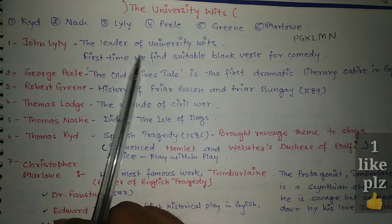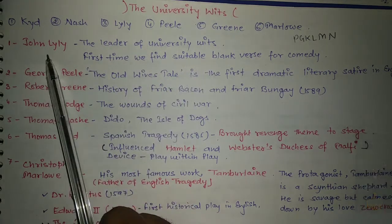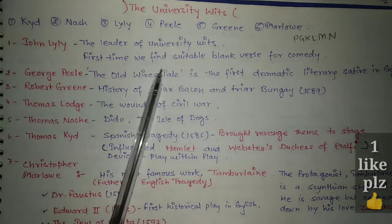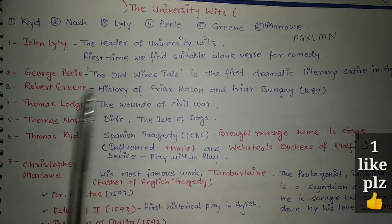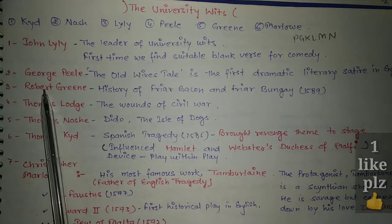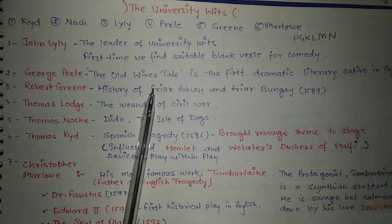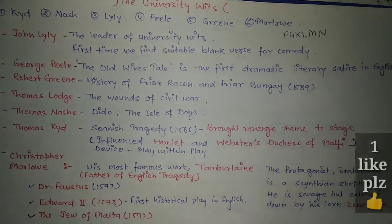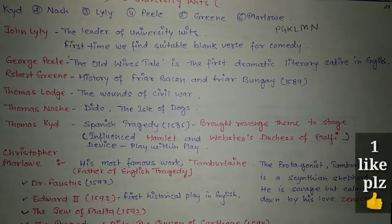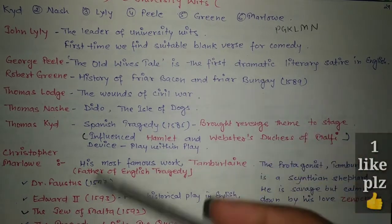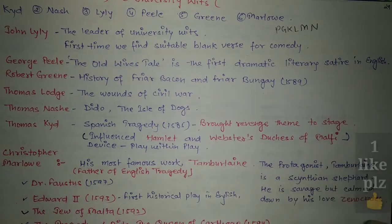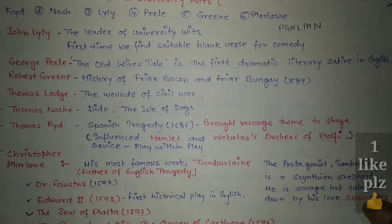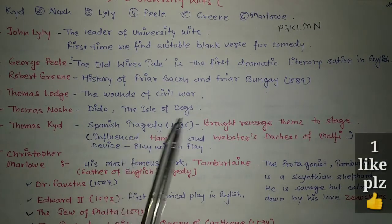John Lily is called the leader of the University Wits. He was the first to find suitable blank verse for comedy. Next was George Peele — his work 'The Old Wife's Tale' is the first dramatic literary satire in English. In a previous video, examples of their works were discussed.